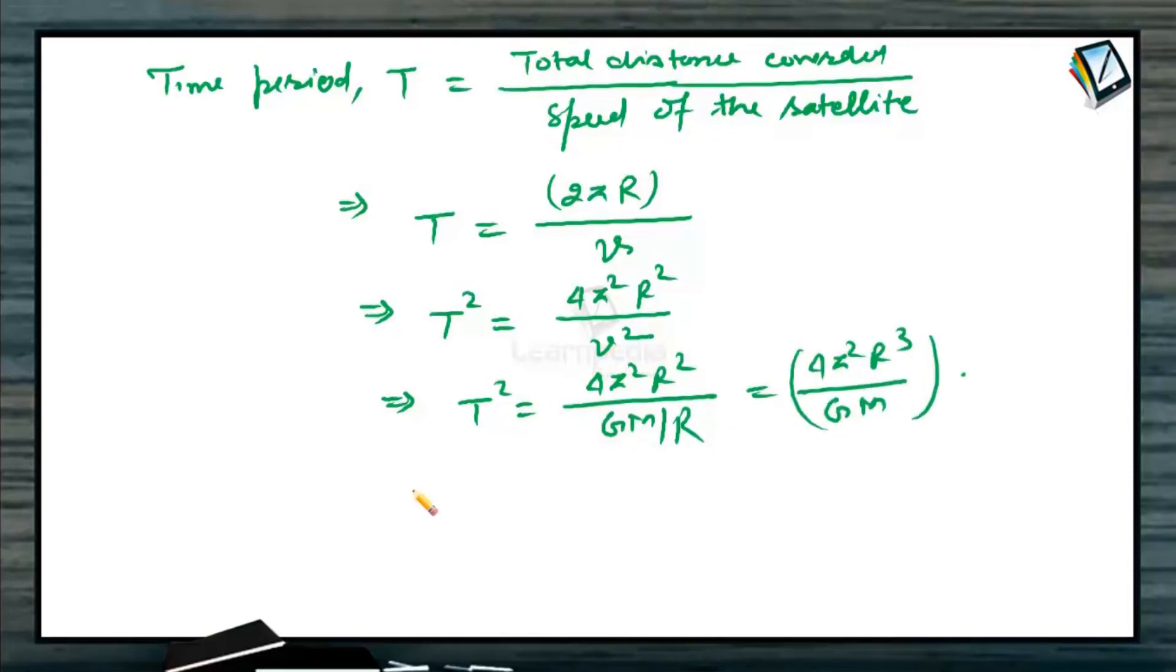So from this expression, we can say that T² is directly proportional to R³. This is Kepler's third law. So now, we have calculated the square of time, which is directly proportional to cube of the semi-major axis.